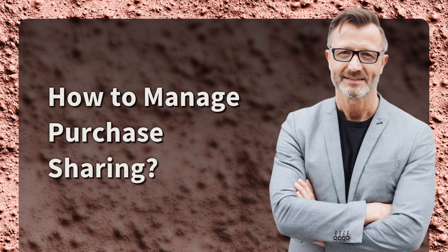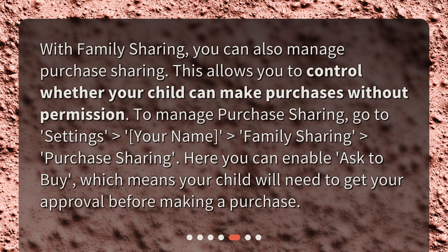How to manage purchase sharing? With Family Sharing, you can also manage purchase sharing. This allows you to control whether your child can make purchases without permission. To manage purchase sharing, go to Settings > Your Name > Family Sharing > Purchase Sharing. Here, you can enable Ask to Buy, which means your child will need to get your approval before making a purchase.